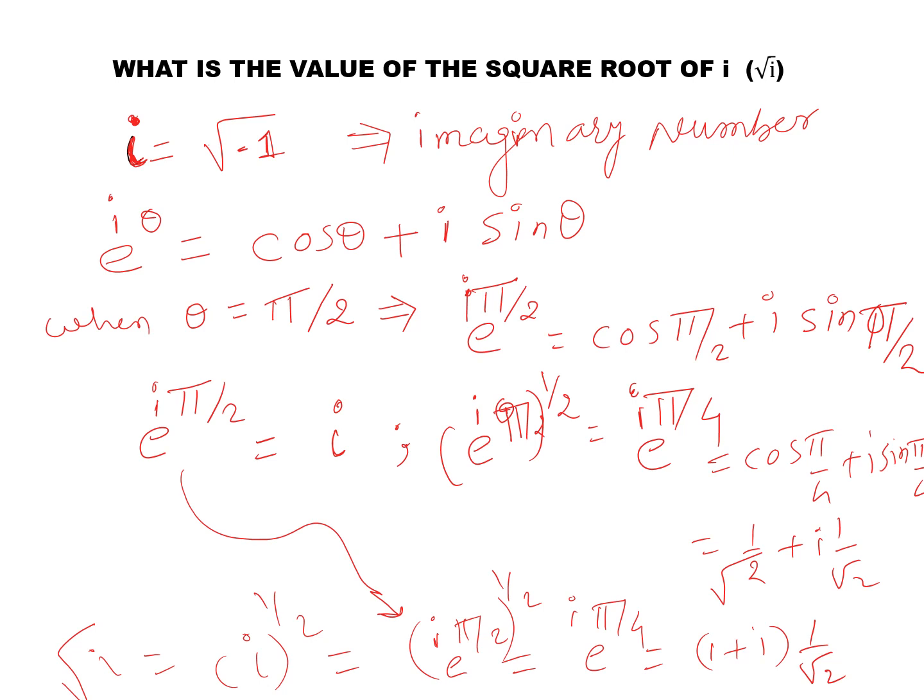Which gives us e raised to i pi by 2 is equal to i. And when we are taking the power of that — e raised to i pi by 2 — as a square root, we can write e raised to i pi by 2 raised to 1 by 2, which is equal to e raised to i pi by 4, equal to cos of pi by 4 plus i sin pi by 4. Since cos of pi by 4 equals 1 by root 2 and sin pi by 4 equals 1 by root 2, we get the value of square root of i is equal to 1 plus i divided by root 2.